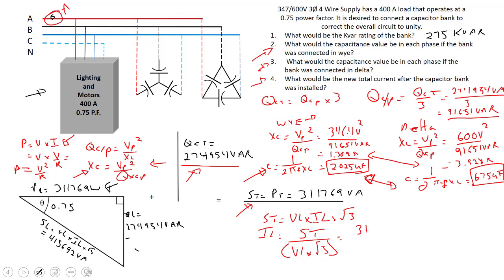If I put those numbers in: 311,769 VA divided by 600 volt times root 3, we're going to get approximately 300 amps.